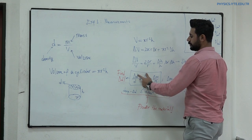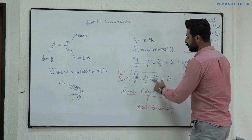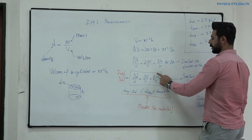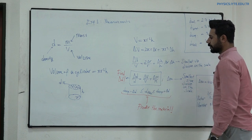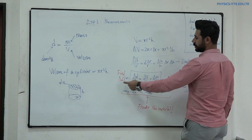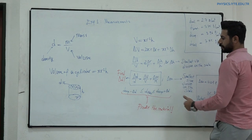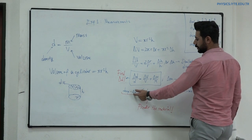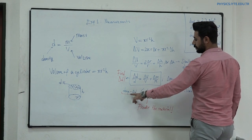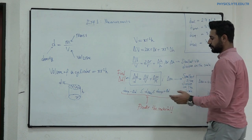And then, using this equation again: delta D over D equals delta V over V plus delta M over M. Starting from this equation, you have to find delta D, and then by using this delta D you have to calculate the material of the object.